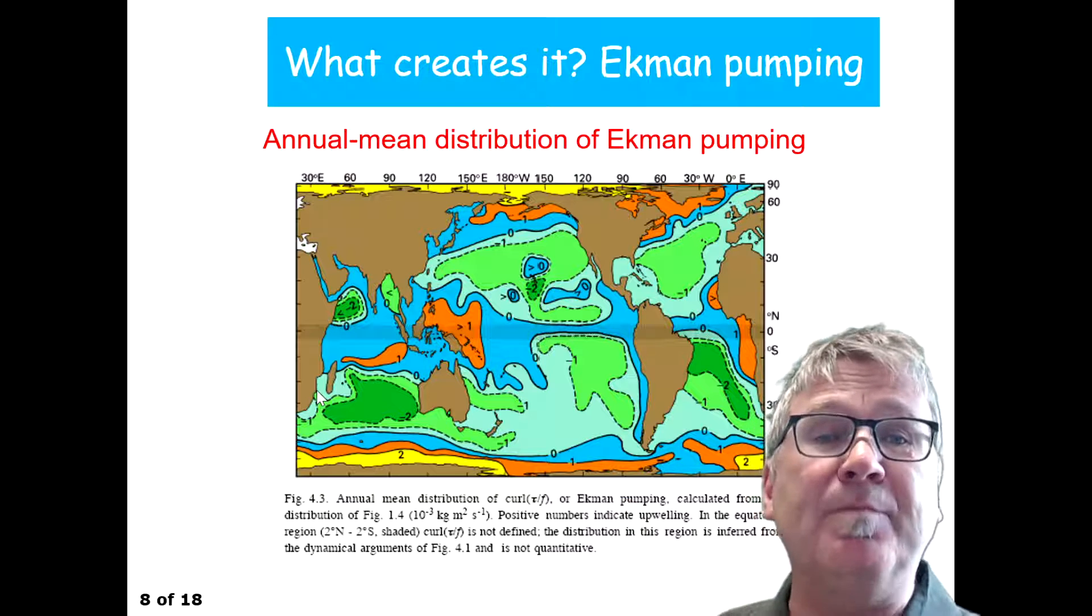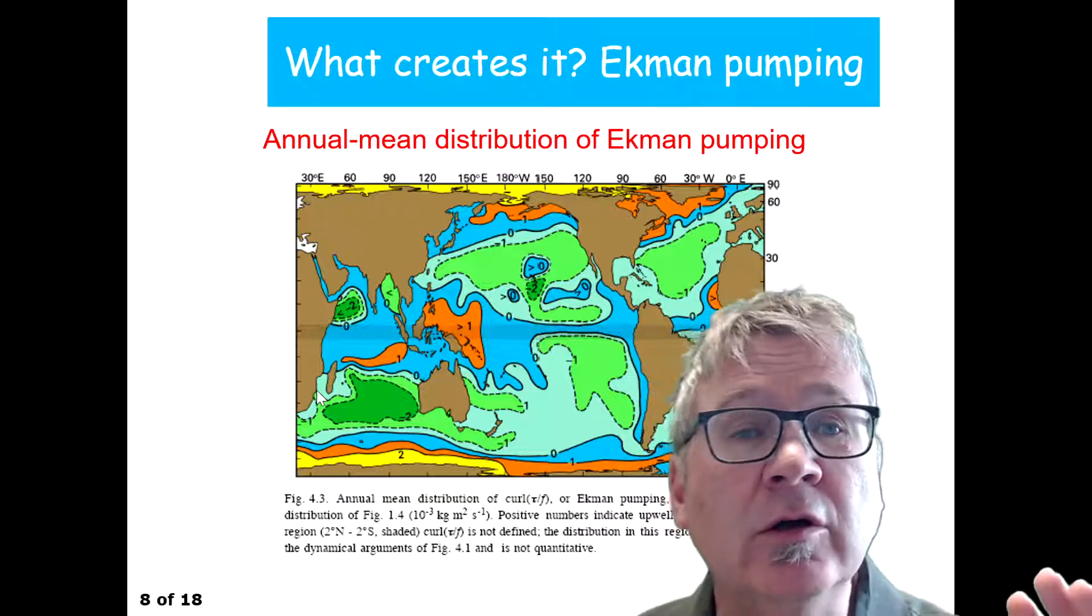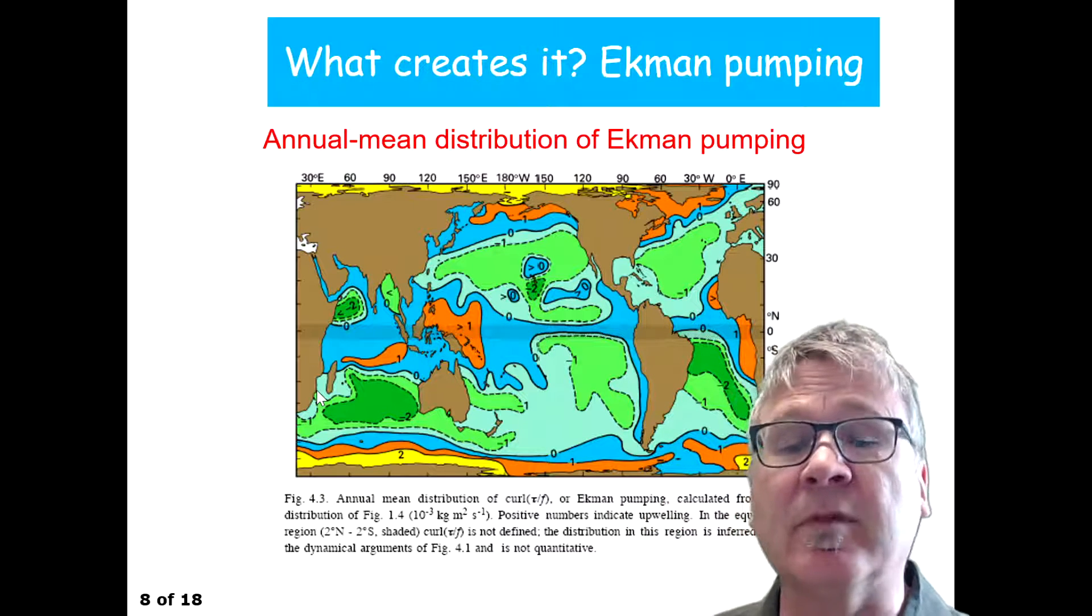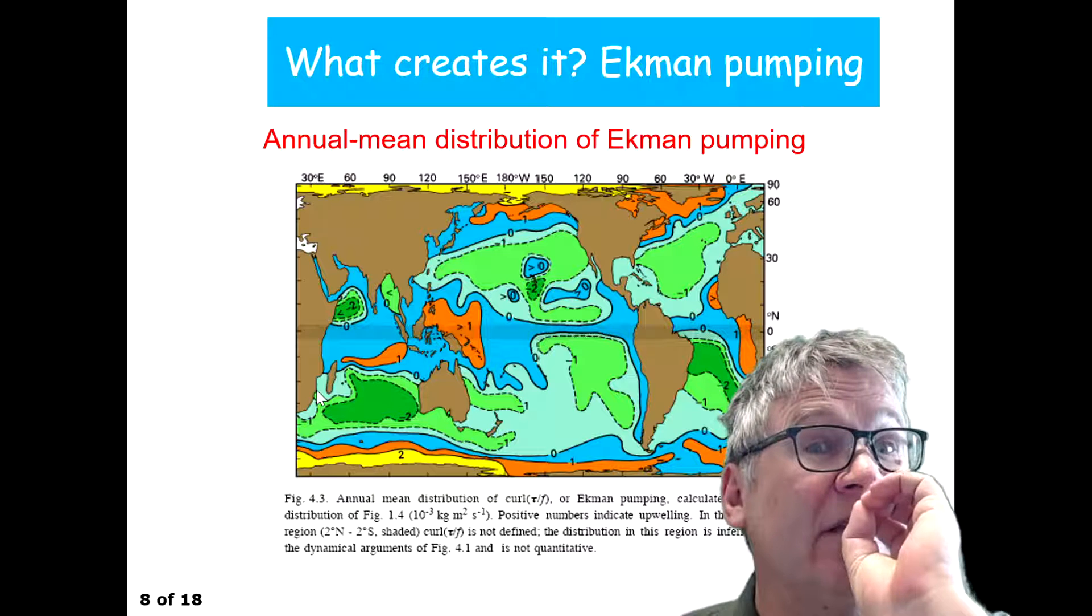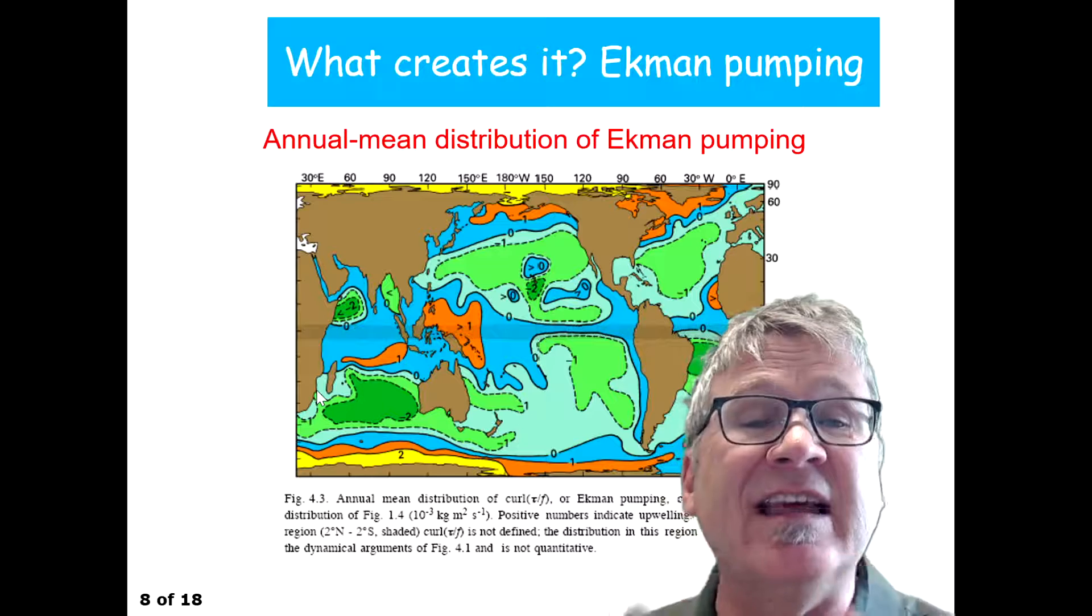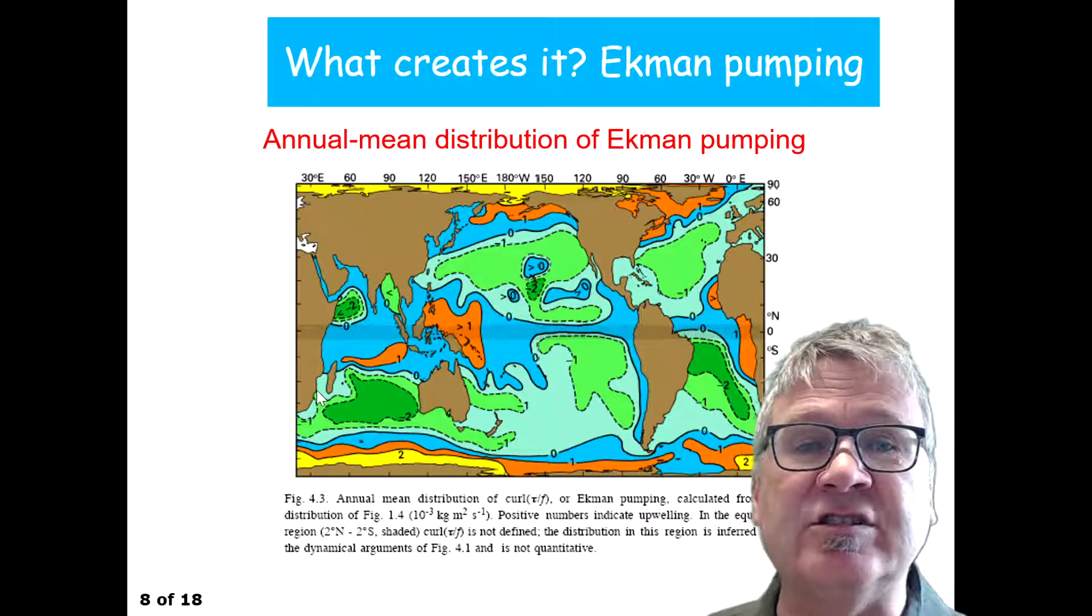It shapes the structure of the internal density field in the ocean in the upper two kilometers of the water, and if the large-scale wind stress curl changes, then it's the density field that actually adjusts to this change.